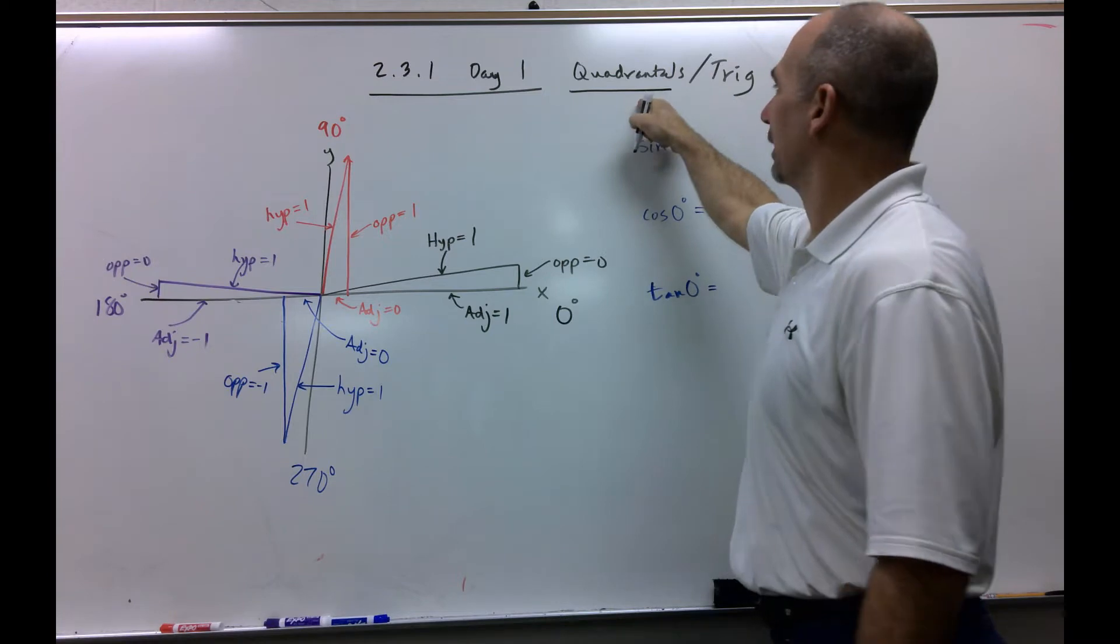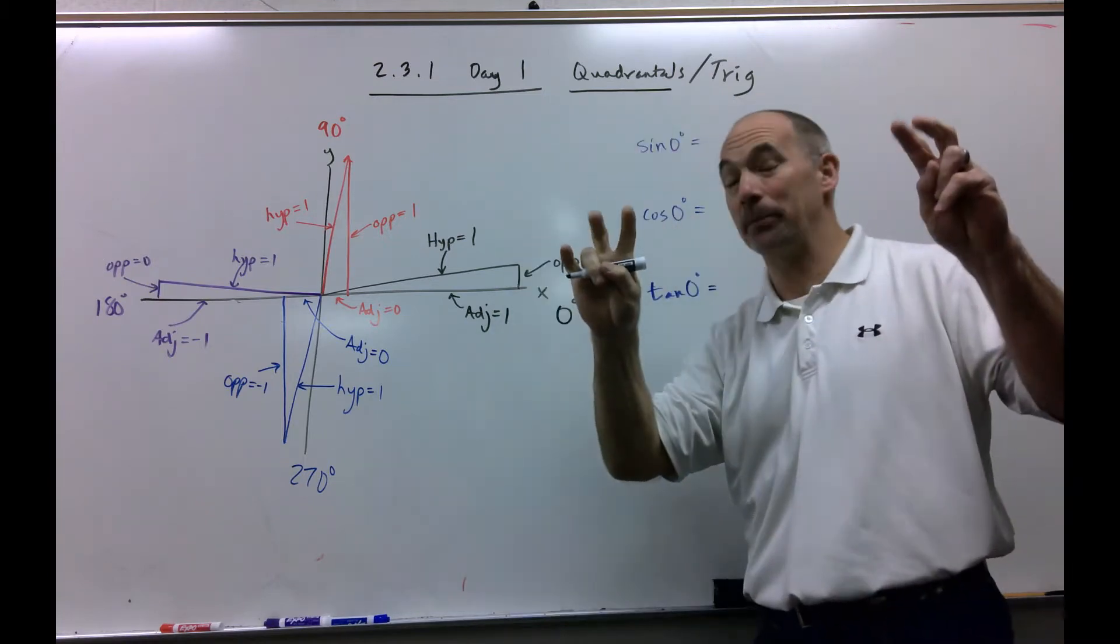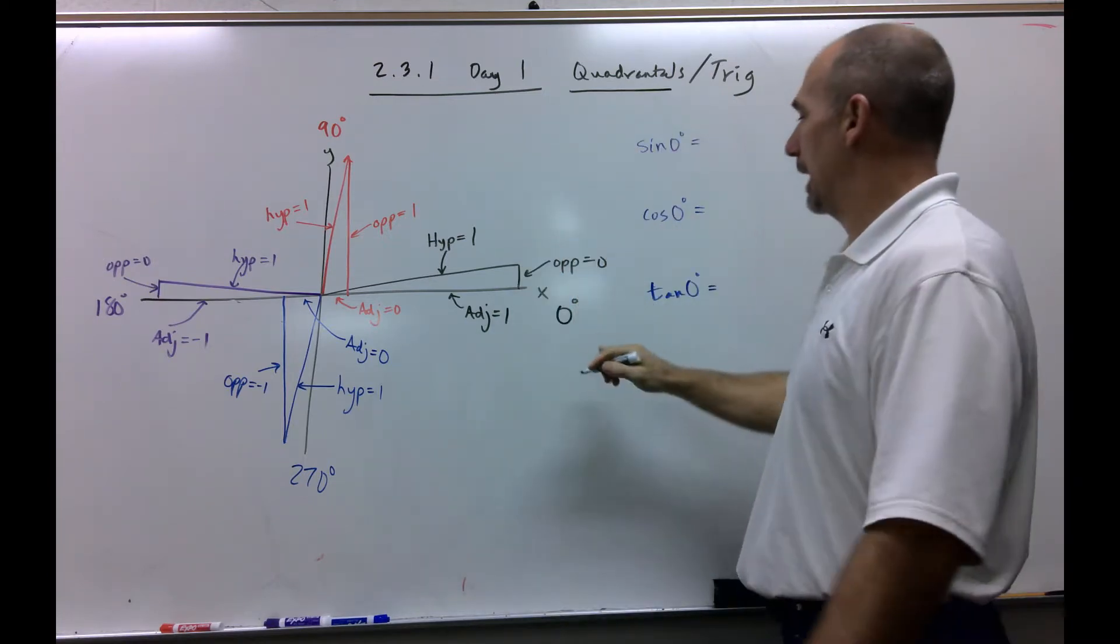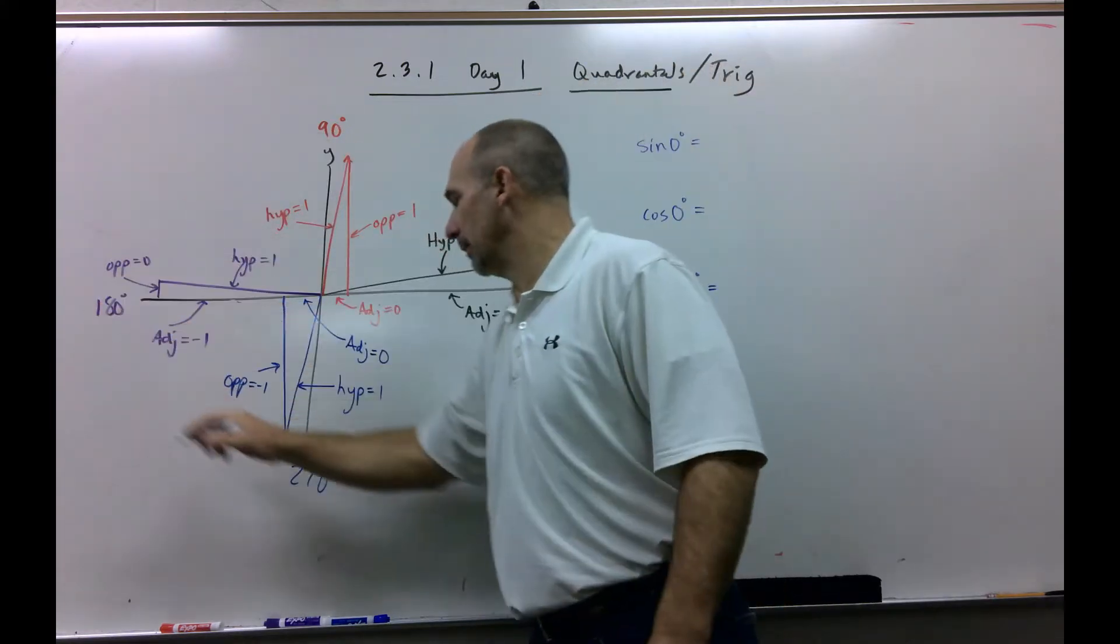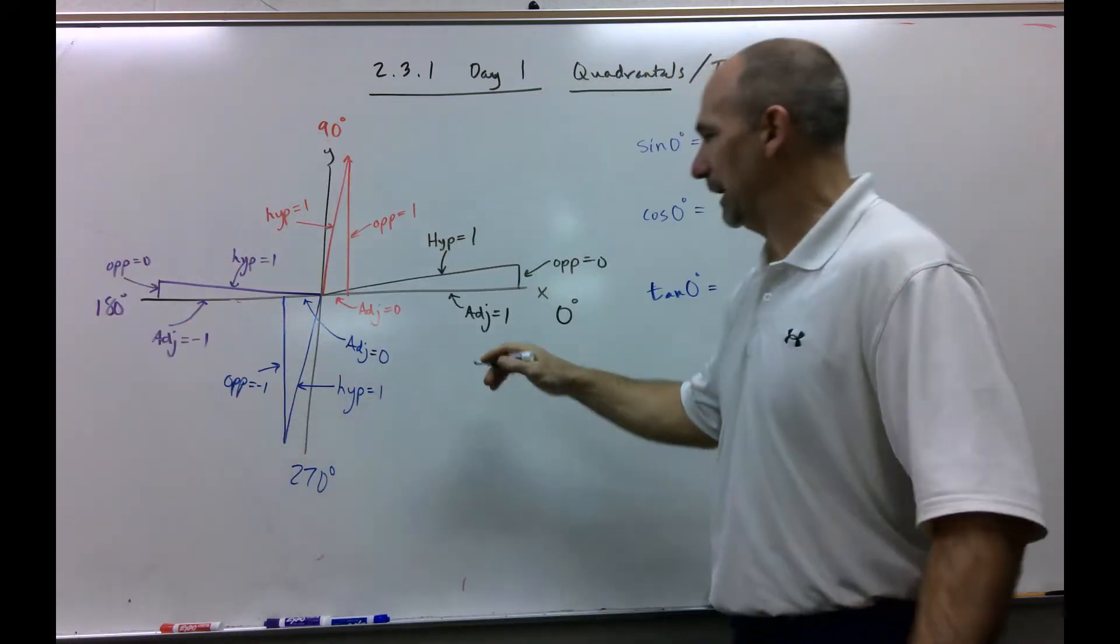A quadrantal is a triangle, an imaginary triangle, at 0 degrees, 90, 180, 270. Now, I'm going to explain each little piece.